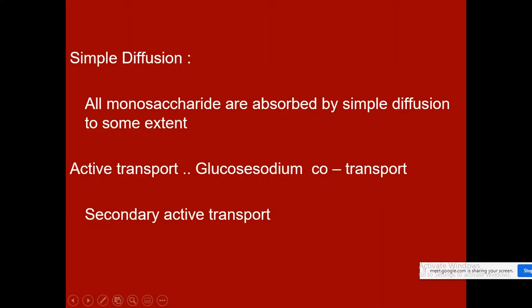There are three transport mechanisms to understand: simple diffusion, facilitated transportation, and active transport. Simple diffusion means movement of a substance across the semi-permeable cell membrane from the lumen of the intestine into the mucosal cell. If the membrane is freely permeable, no special transportation is required and substances move from outside into the cell. This does not require any special protein or energy, and is called simple diffusion.